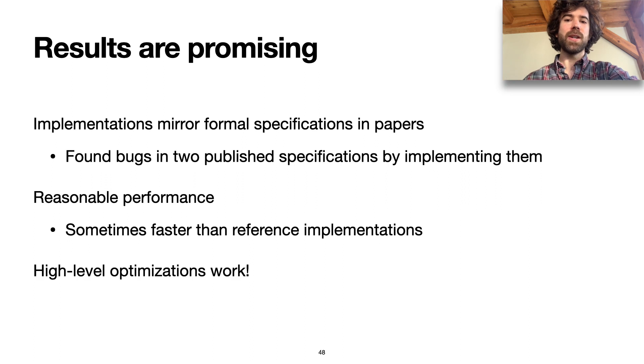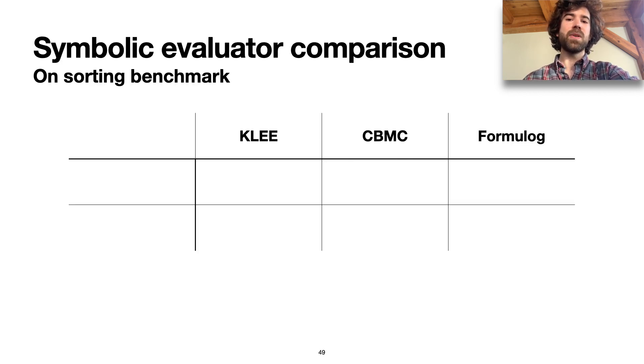And finally, we were able to see that these high-level optimizations I've talked about really do work in practice, which is pretty cool. A good example of that was a sorting benchmark we used in our symbolic evaluator case study, where we compared KLEE, CBMC, and Formulog.